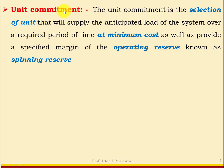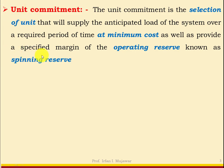The unit commitment is the selection of units that will supply the anticipated load of the system over a required period of time at minimum cost, as well as provide a specified margin of operating reserve known as spinning reserve. Power plants always have an operating reserve — for example, if rated capacity is 100 MW, we may keep 10 MW extra for sudden peak loads. That 10 MW is the operating or spinning reserve.